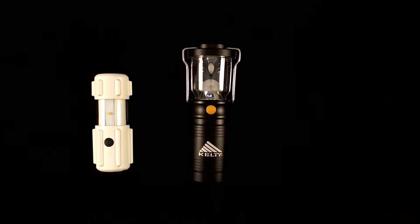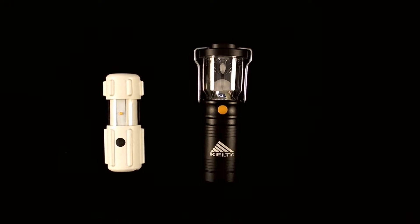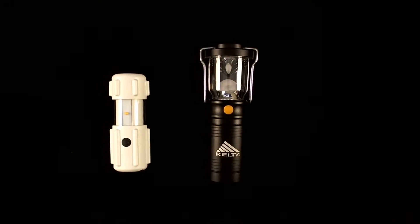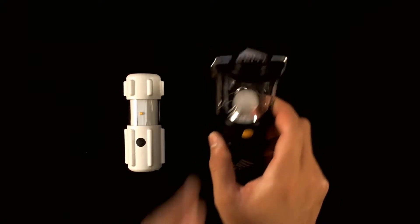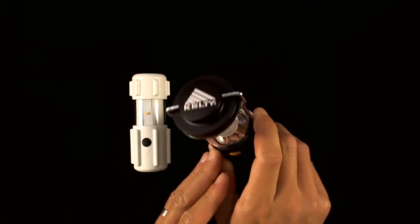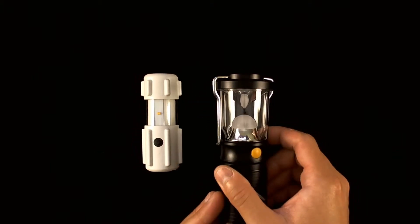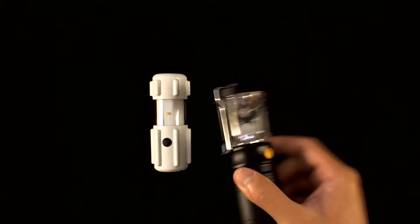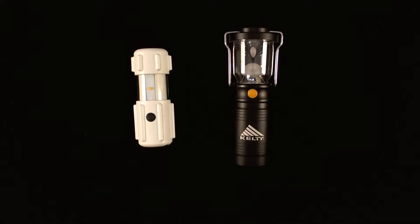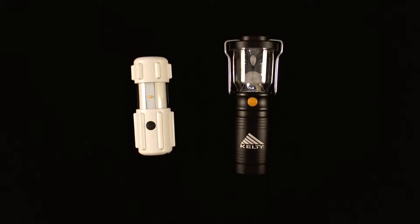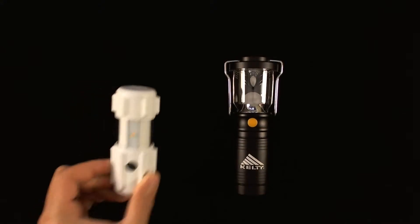Both the Kelty Lumatech Lantern and the RPAL feature a polycarbonate lens which is both impact and scratch resistant. The Kelty utilizes a diffused frosted lens with a couple of reflectors similar to the ones we've seen in both Rayovac and Streamlight lanterns. The RPAL has exposed LEDs with no reflectors or diffusers.